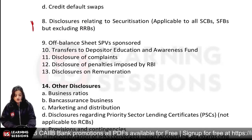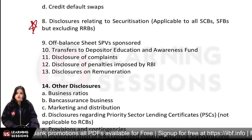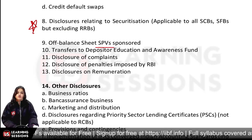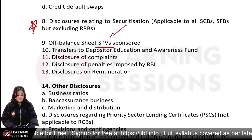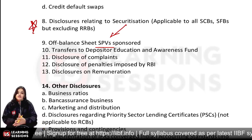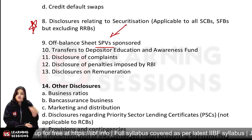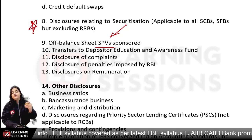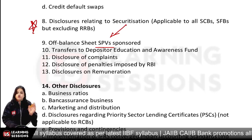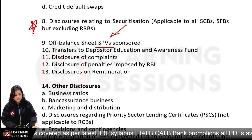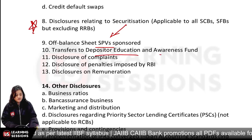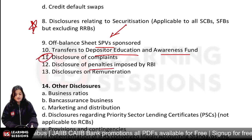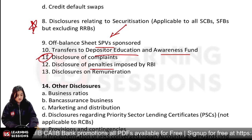If a bank is involved in derivatives, the risk involved must be disclosed. Then off-balance-sheet items — SPV, special purpose vehicles sponsored by the bank, which are off-balance-sheet. You will also disclose the Depositor Education and Awareness Fund, complaints against the bank, and any penalties imposed by RBI.